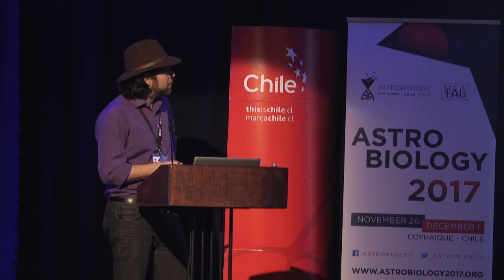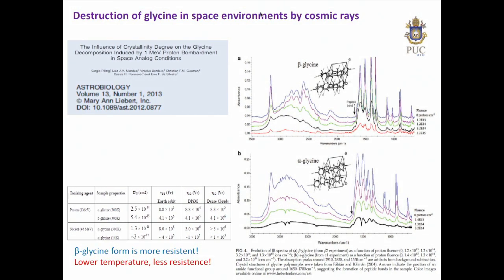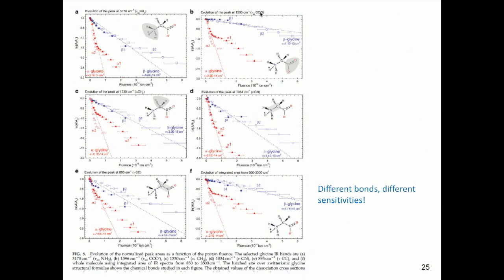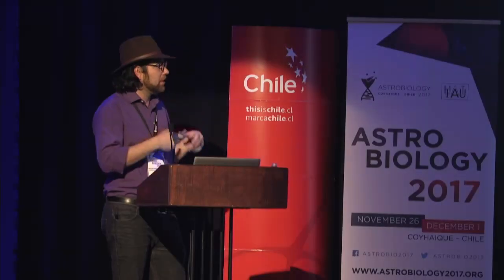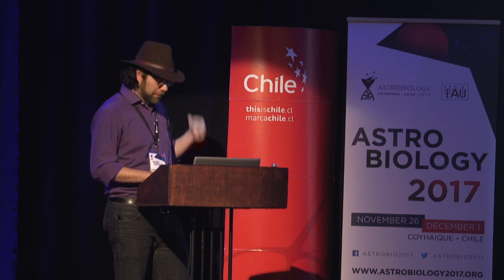And there is another experiment investigating the destruction of amino acids in space. And in this type of experiment we were able to understand which part of the molecule is more sensitive to radiation during radiolysis. For example, monitoring different infrared bands we can see different parts of molecules and we observe that certain parts of molecules are much more sensitive to radiation than others. This is one interesting result that we can have from the experiments.